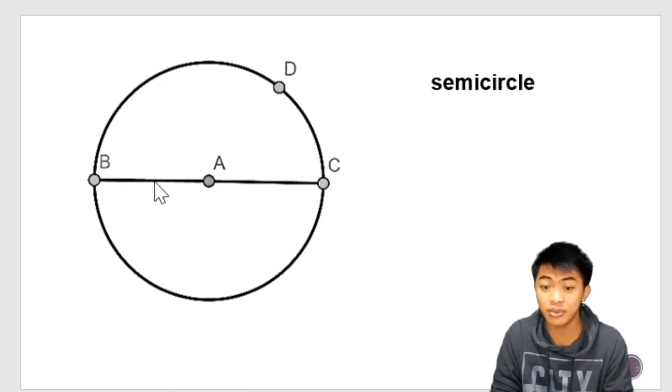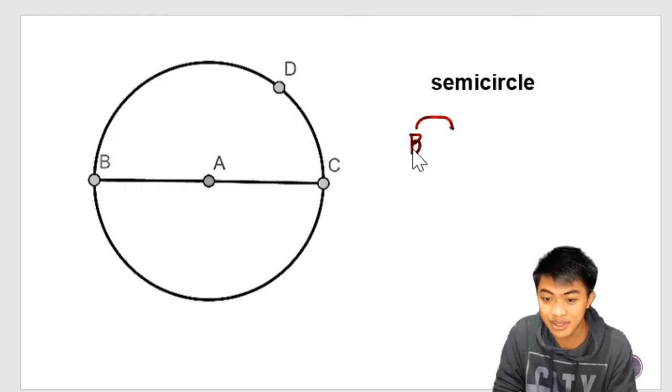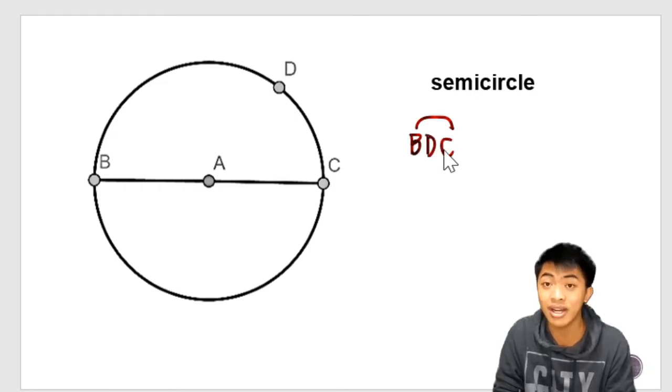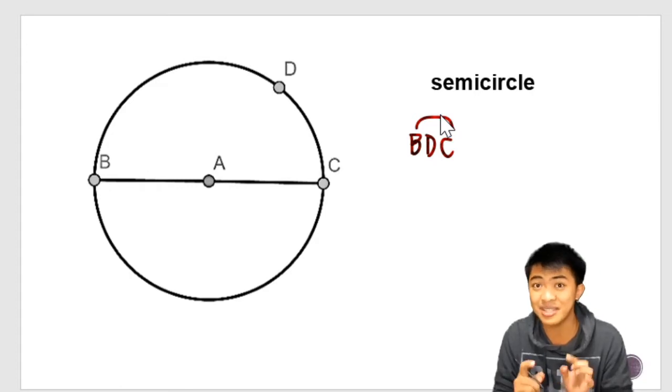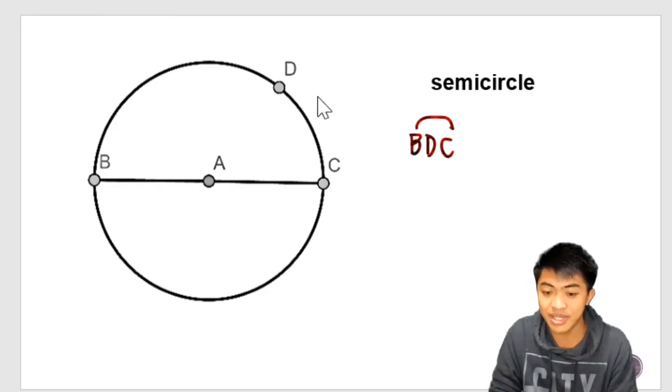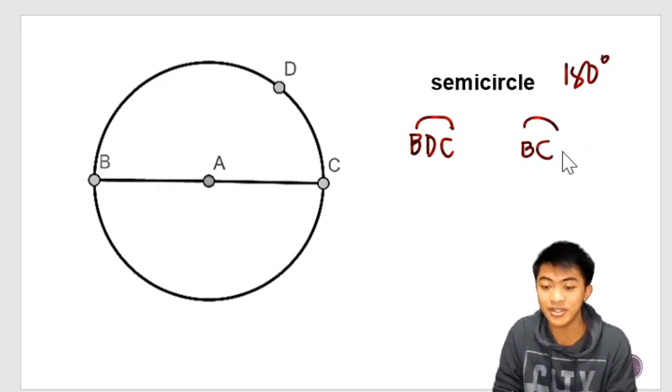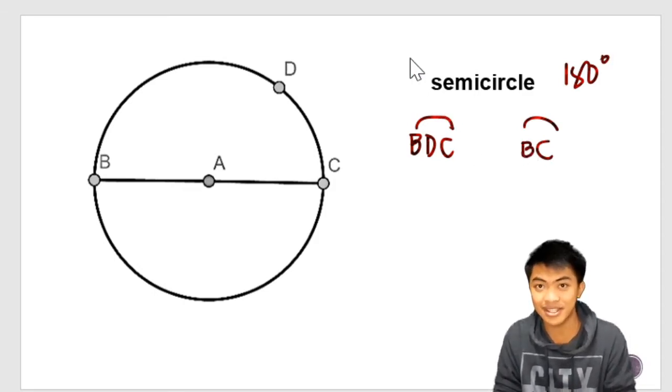In this given figure, we do have two semicircles. We have arc BDC. So this is how we name arcs. We follow the direction and we draw a curved line just above these letters. So an arc can use three or two letters. So semicircle, we have BDC and arc BC. And semicircle has a degree measure of 180 degrees. A whole circle measures 360 degrees.